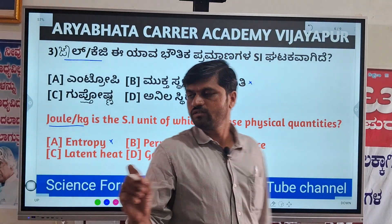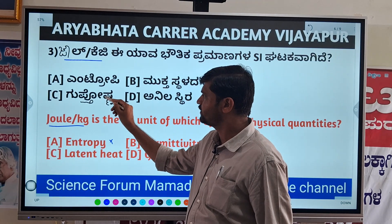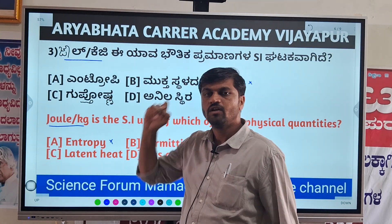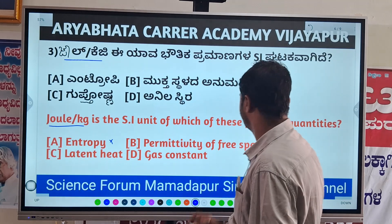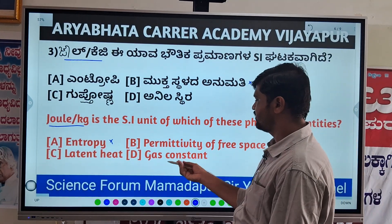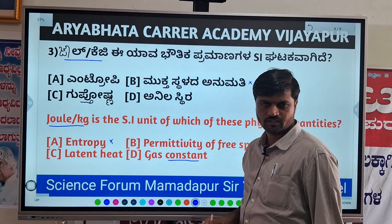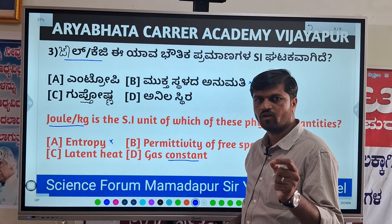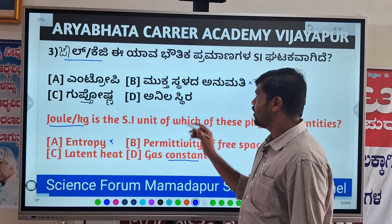So the SI unit of latent heat is Joule per kg. The gas constant is also a constant — any constant has no unit, it is a unitless quantity.